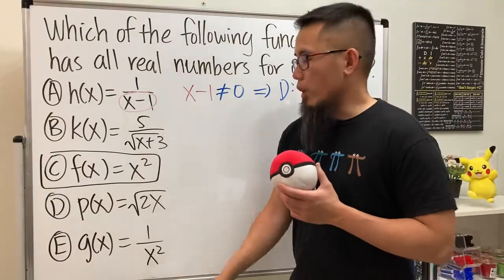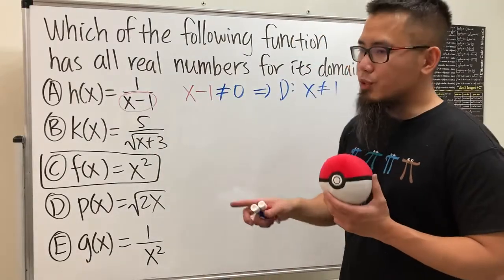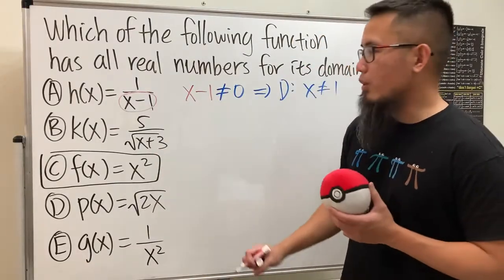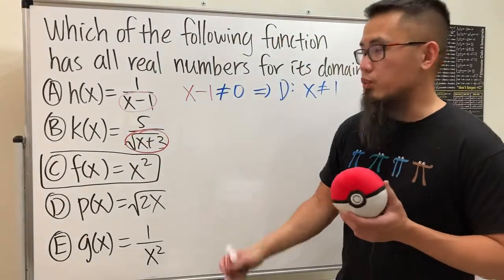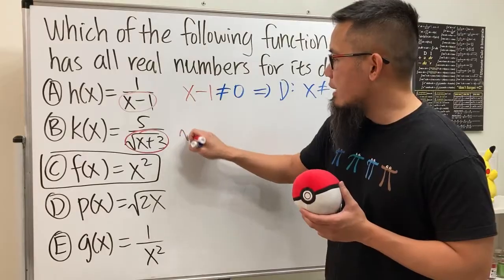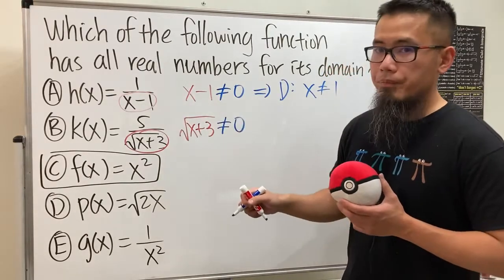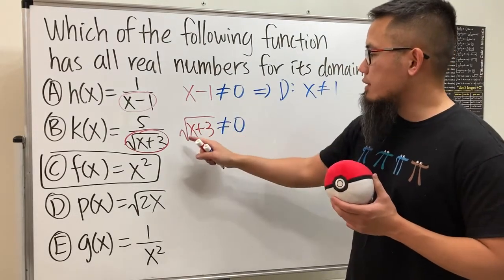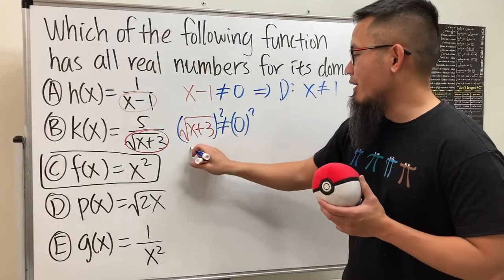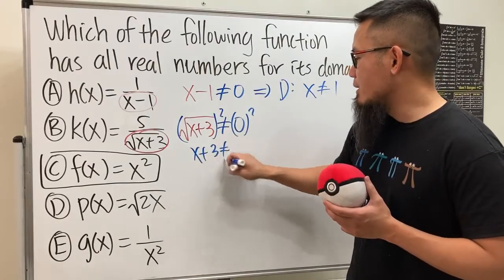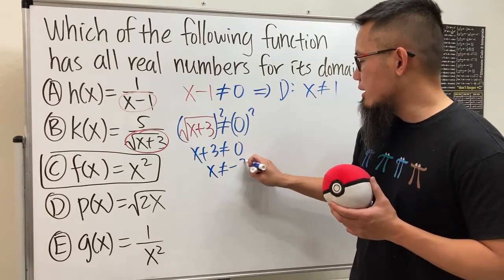For the second function, x is in the denominator but also inside a square root, so it's tricky. Same fundamental rule: the denominator cannot equal 0. We set square root of (x + 3) cannot equal 0. Squaring both sides gives x + 3 cannot equal 0, so subtracting 3 from both sides gives x cannot equal negative 3.